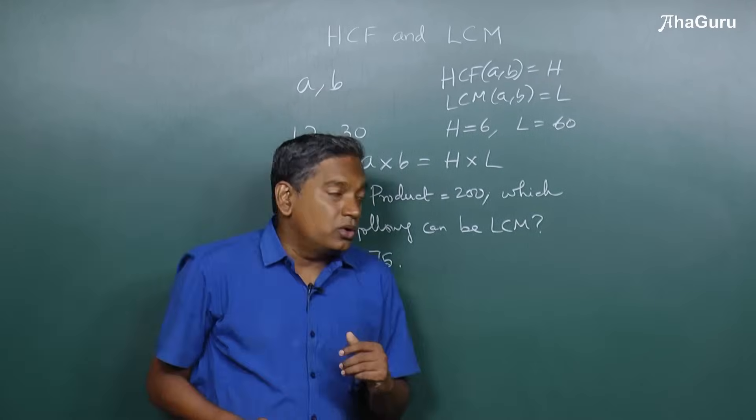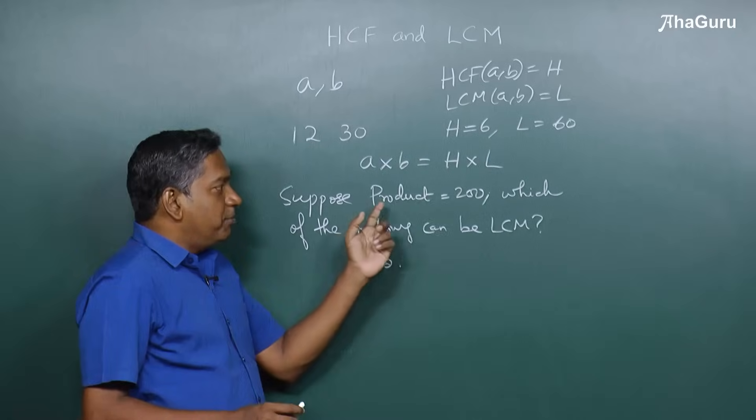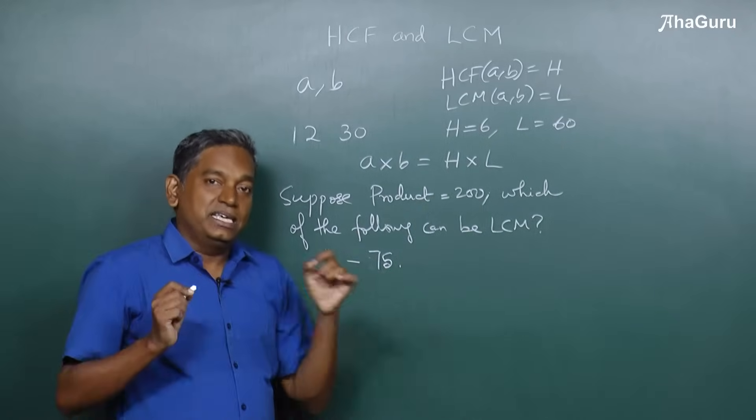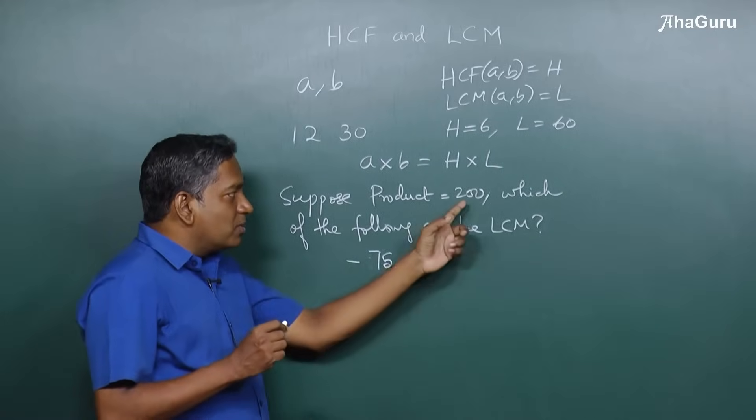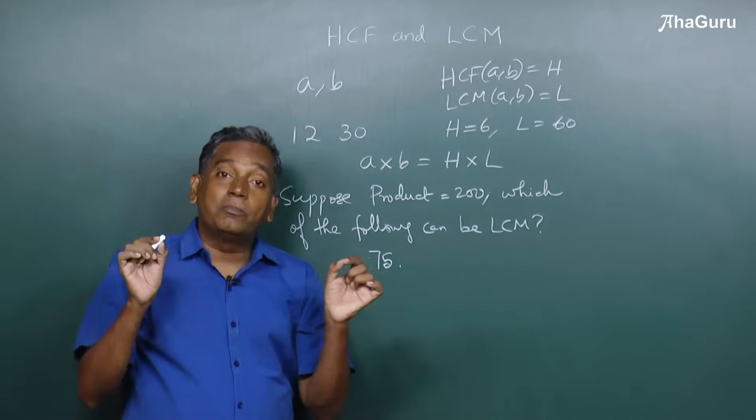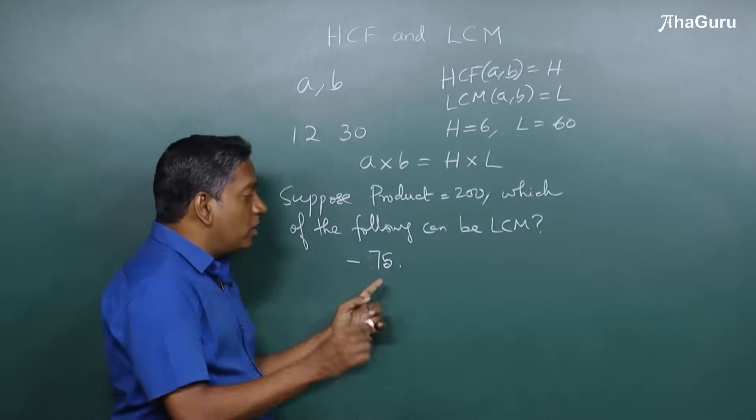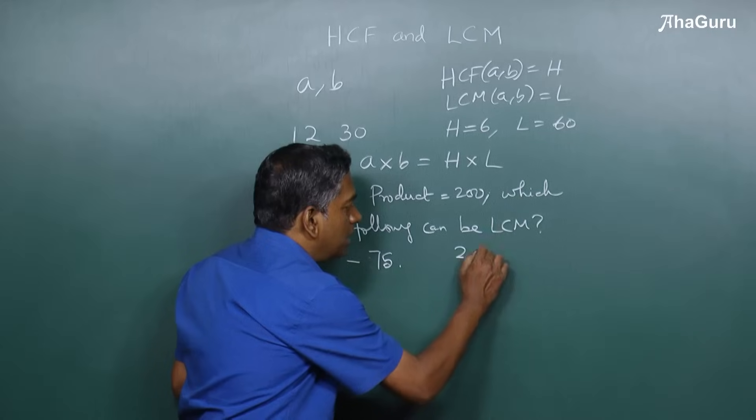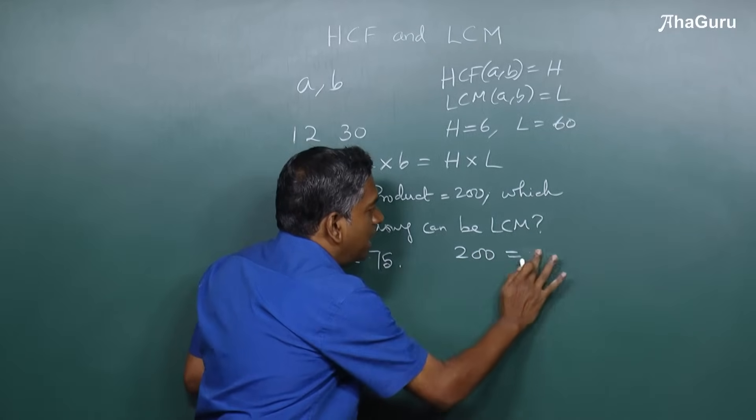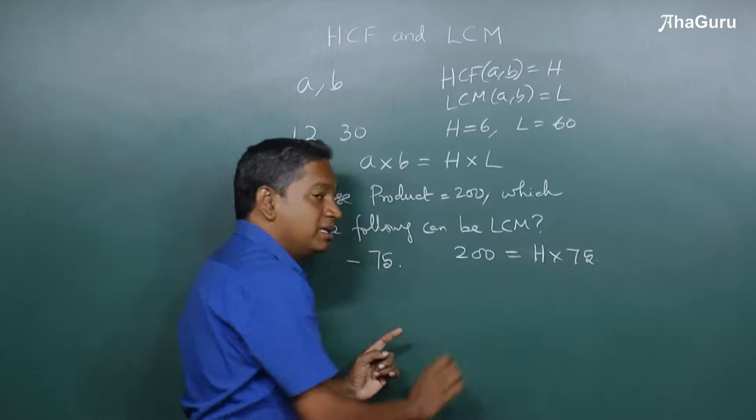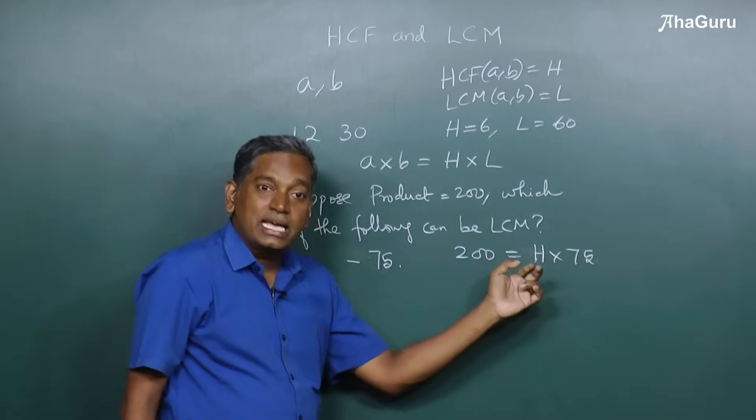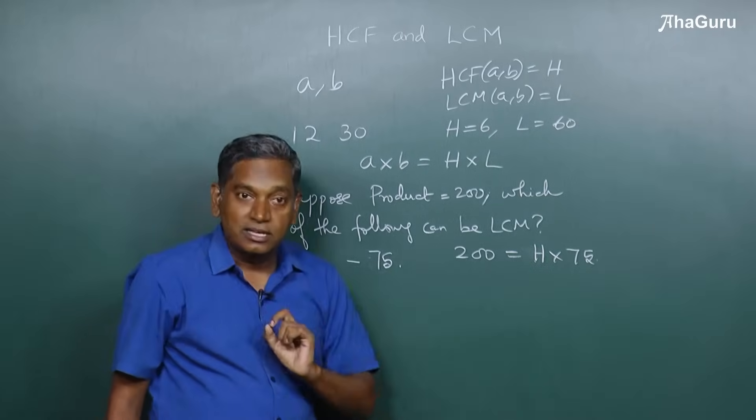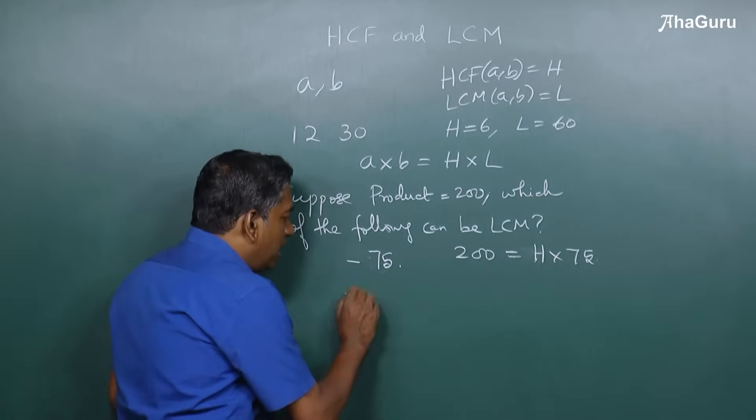For example, let's take the number 75. So the question is if the product of two numbers is 200, can 75 be the LCM? When you are asked questions like this, you don't know what the two numbers are, so you're going to see if we can use this relation. If you say 200 equals H into 75, then you will find that H is actually a fraction and it does not work. Many students understand this.